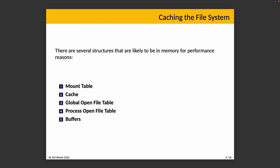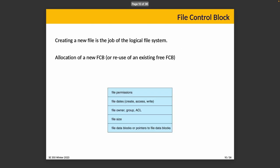Creating a new file is a job of the logical file system, and that requires allocation of a new file control block or reuse of an existing free one. A file control block contains: permissions, dates reflecting last read, last written, last accessed, and creation time, the file owner, the group it belongs to, access control lists, file size, and the data blocks or pointers to the file data blocks — the actual content of the file.